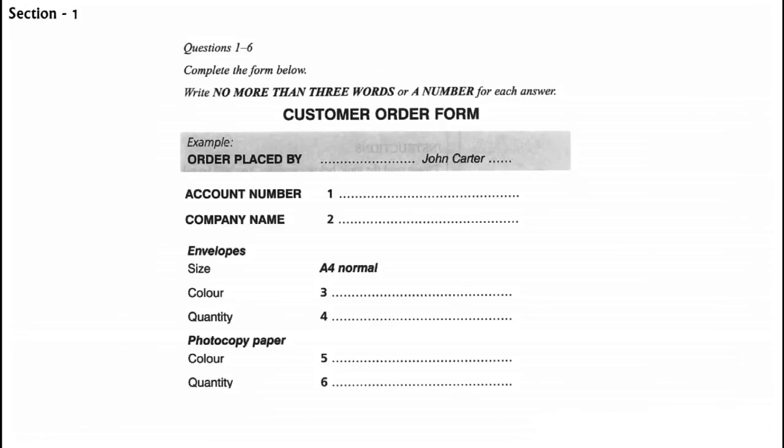Something else, John? Yes. We need some coloured photocopy paper. What colours do you have? We've got purple, light blue, blue, light green, whatever you want, pretty much. There are 500 sheets to the pack. Right. Let's see. We're going to need a lot of blue paper for our new price lists. So, can you give us ten packs, please? Make sure it's the light blue, though. Ten packs of the light blue.